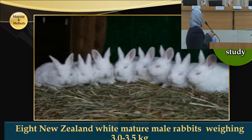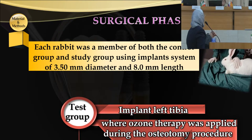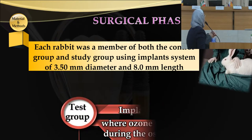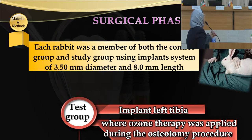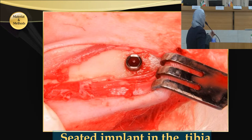In the experimental study, the second section of this study, eight New Zealand white mature male rabbits weighing 3 to 3.5 kilograms were used. Each rabbit was a member of both the control group and study group, using an implant system of 3.5 millimeter diameter and 8 millimeter length. In the control group, the implant in the right tibia was inserted by the conventional method. In the test group, the implant in the left tibia was placed where ozone therapy was applied during the osteotomy procedure. A gentle and sterile surgical technique was used, replicating as closely as possible the procedures used for human implant placement. This figure shows the seated implant in the tibia.